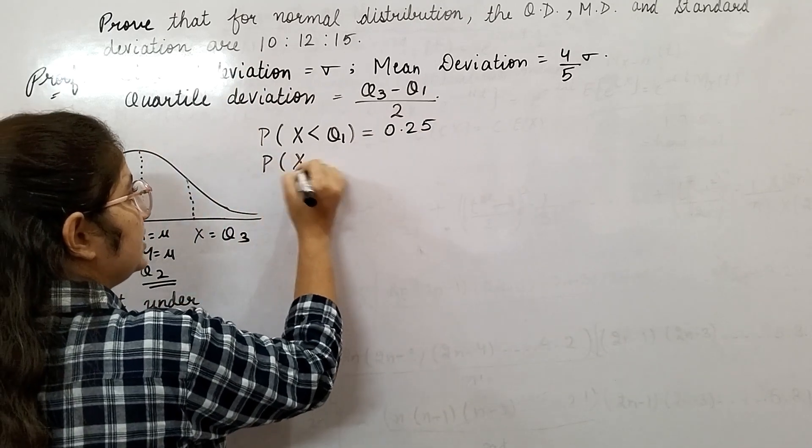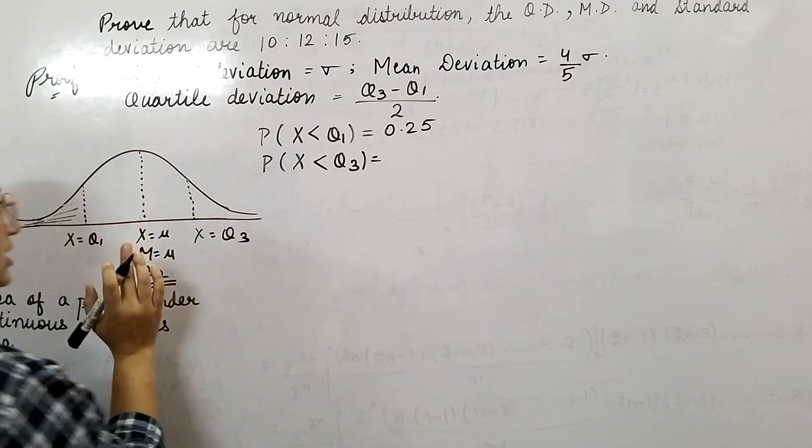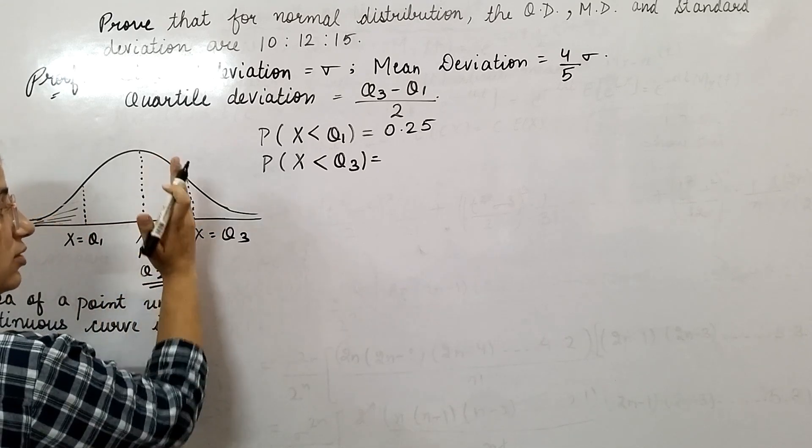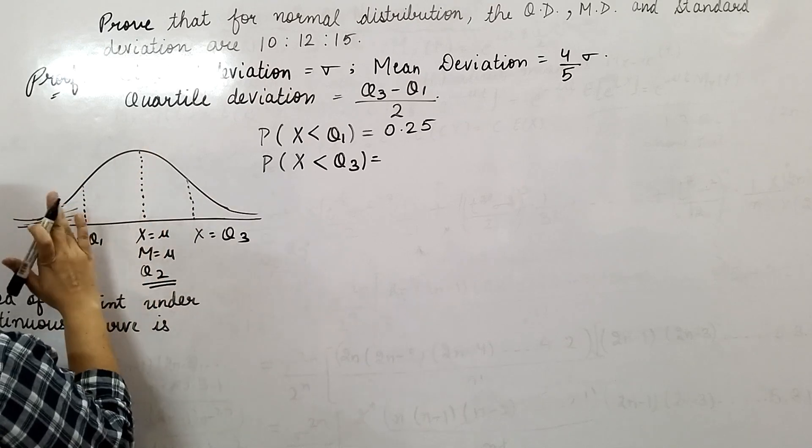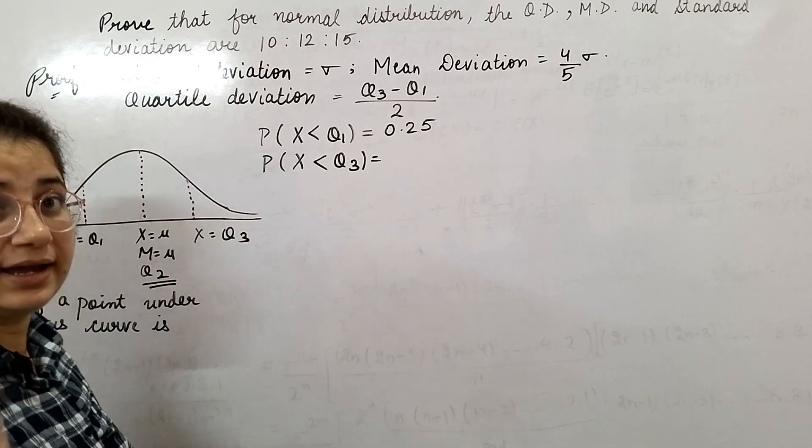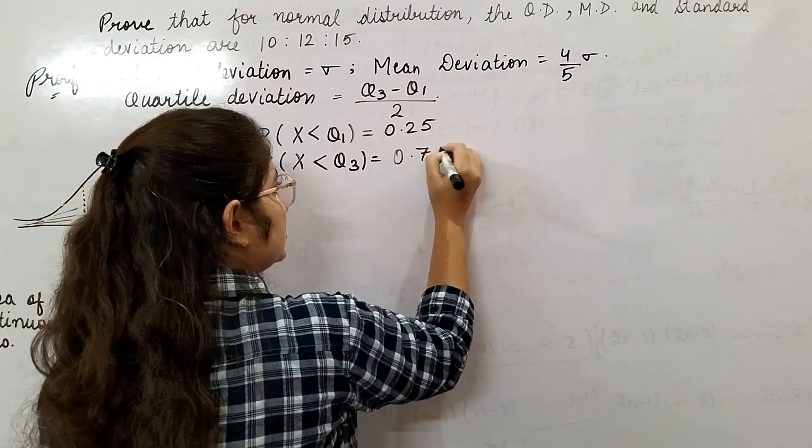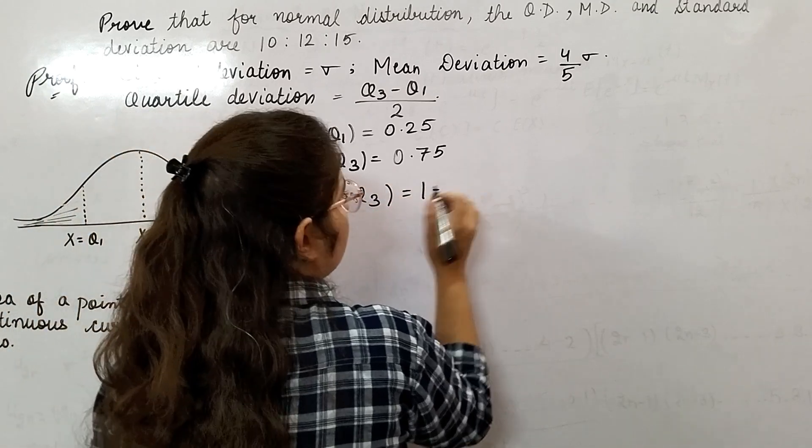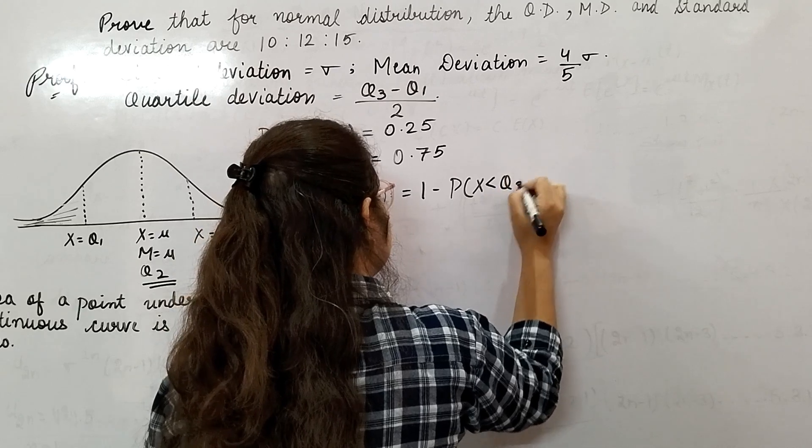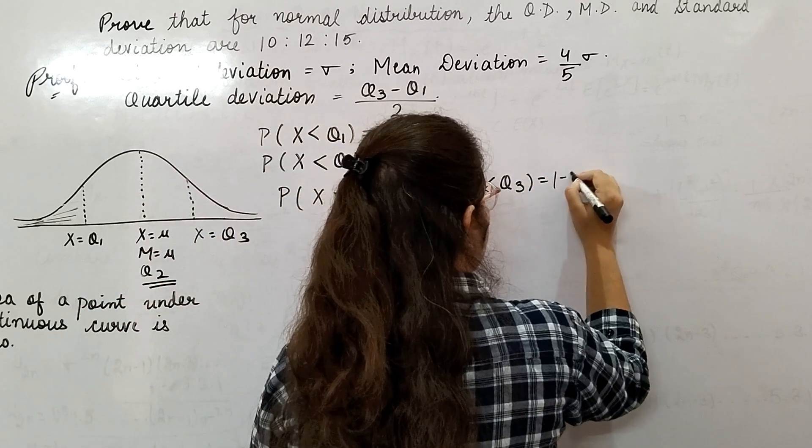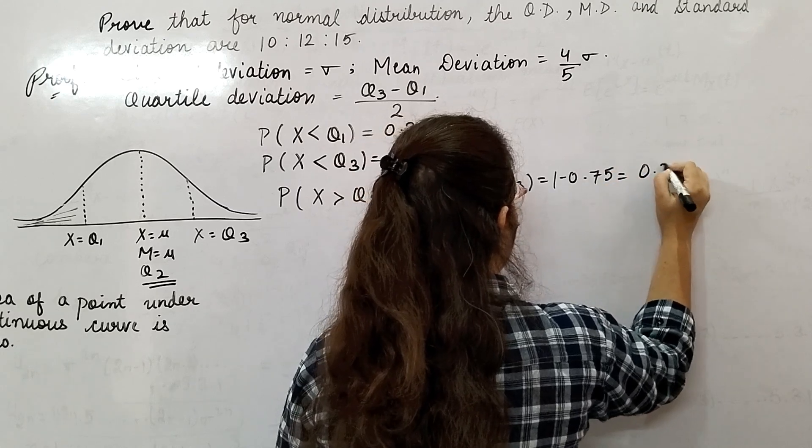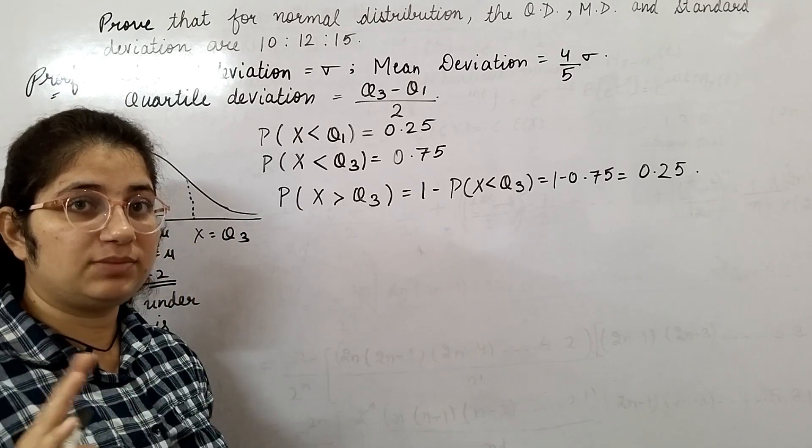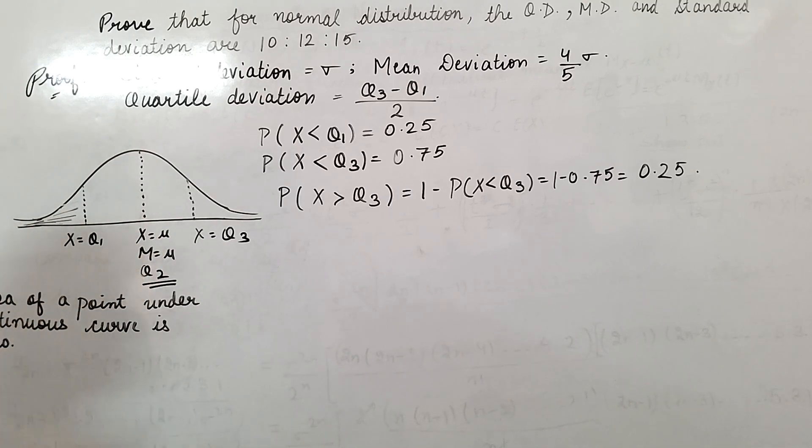Now, probability of x less than q3—25%, 25%, and 25%, so 75%, which in probability form is 0.75. Probability of x greater than q3 is 1 minus probability of x less than q3, equal to 1 minus 0.75, equal to 0.25. I have not written equality because of the reason I told you.